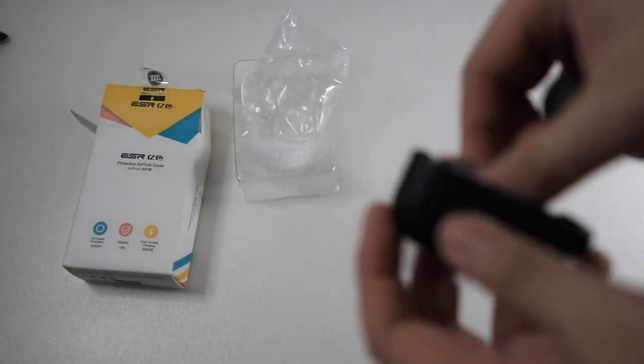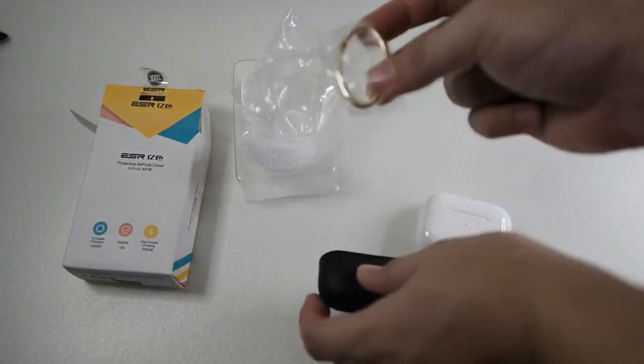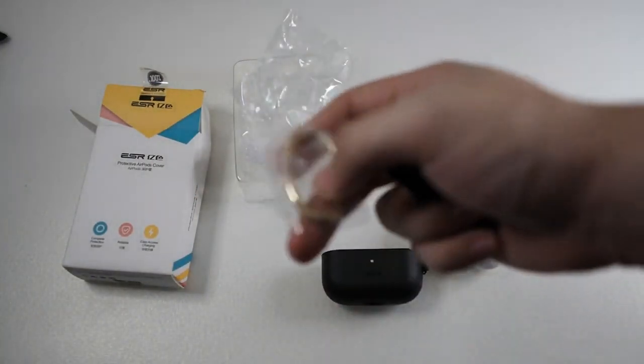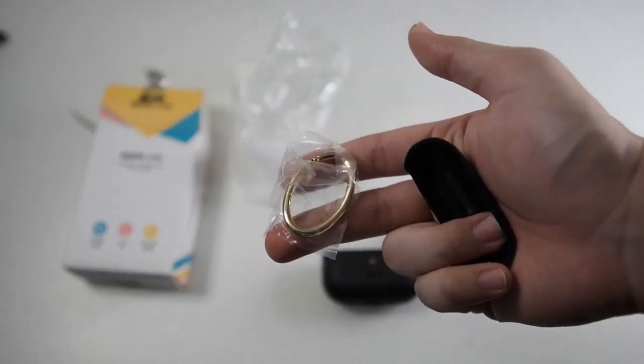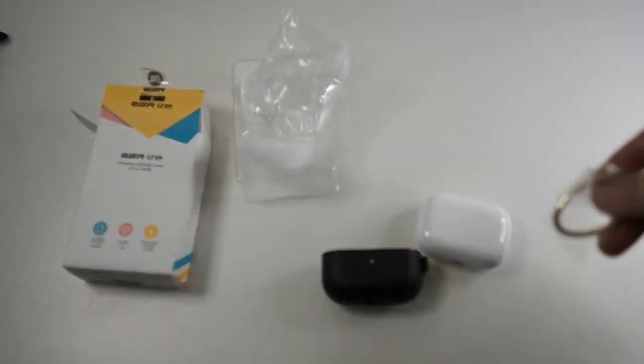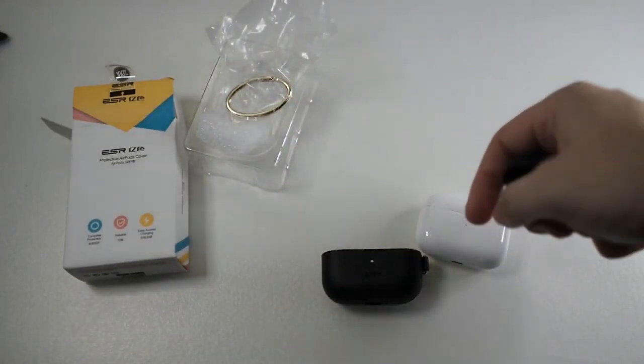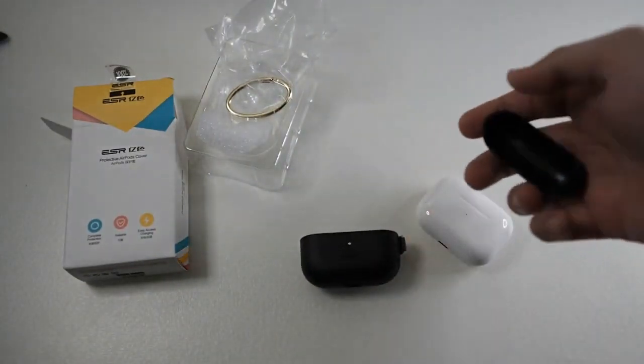There's also a foam inside and a metal ring. In the picture, this ring is actually circular. I'm not sure why it's oval here. Anyway, I won't be using this because I rather use a lanyard or something.